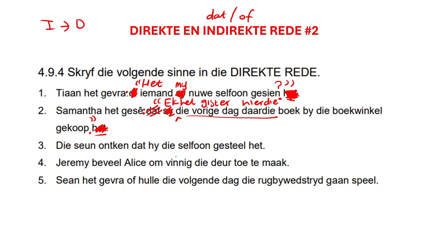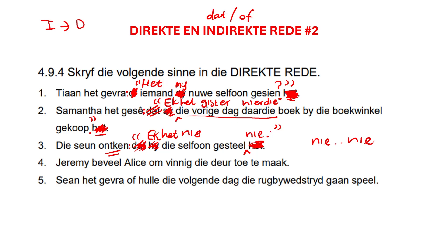Die sien onken dat hy die saalvoen gesteel het. So: Die sien onken — I put my colon, remember 'dat' and 'of' I remove, and I open my quotes. Hy die saalvoen gesteel het — 'hy' becomes 'ek', and we put 'het' back in its place: Ek het. Now what's interesting about this one — it's an ontkenning. What happens to an ontkenning? Nie, nie — my double negative. So: Ek het nie die saalvoen gesteel nie. Full stop. I close my quotation. Easy peasy.